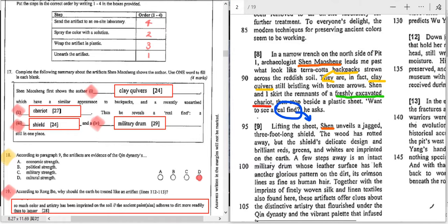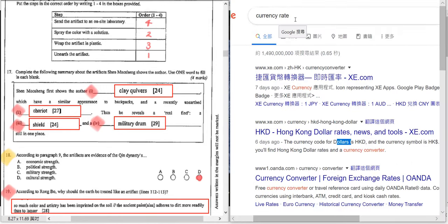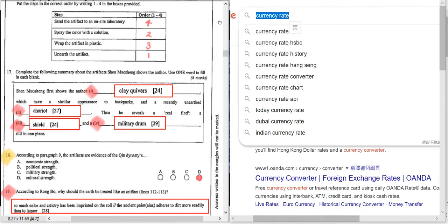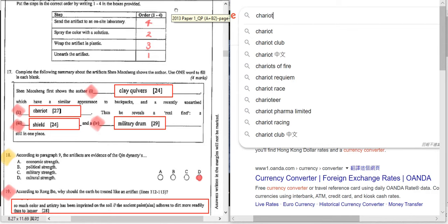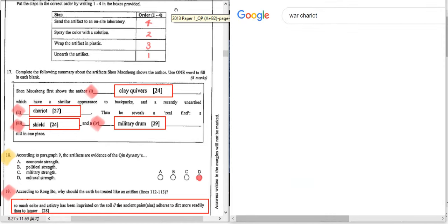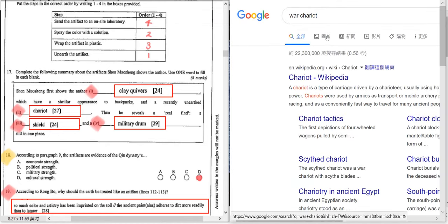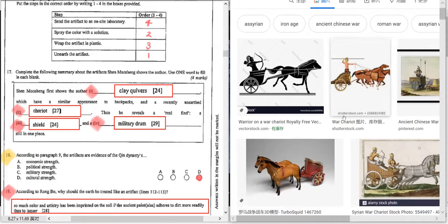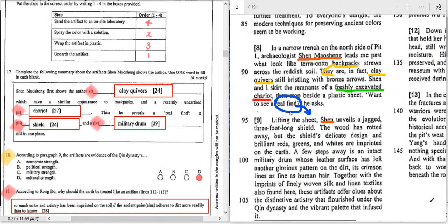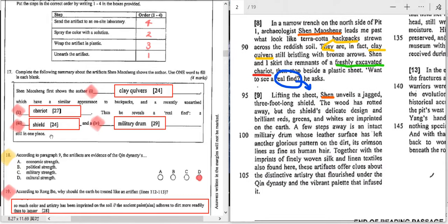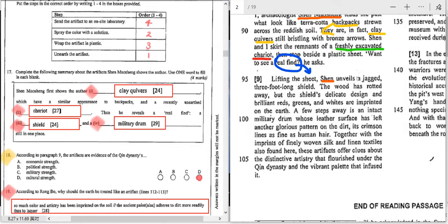And then the real find, which brings us to the next paragraph. So at least we find item one and item two are recently unearthed and recently or freshly excavated. So these are words that give you hints. What is recently unearthed? Which also points at this freshly excavated chariot. A chariot is some kind of a war vehicle to carry the soldiers.